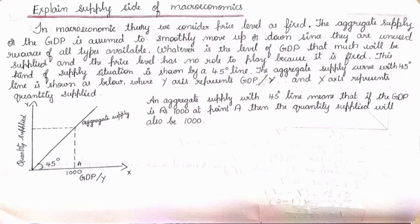Now next — the aggregate supply, or the GDP, is assumed to smoothly move up or down since there are unused resources of all types available. What does this mean? Aggregate supply and aggregate demand — we have already discussed how to draw aggregate demand in a previous video. So, aggregate supply is similar: the total supply in the economy — how much supply there might be in a year.